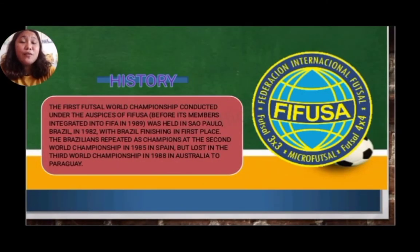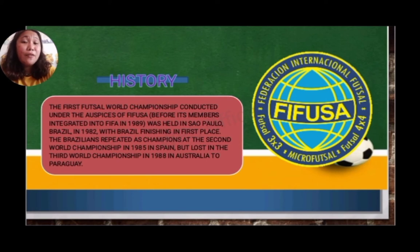The first Futsal World Championship, conducted under the auspices of FIFUSA before its members integrated into FIFA in 1989, was held in São Paulo, Brazil in 1982, with Brazil finishing in first place. Brazil repeated as champion at the second World Championship in 1985 in Spain, but lost the third World Championship in 1988 in Australia to Paraguay.